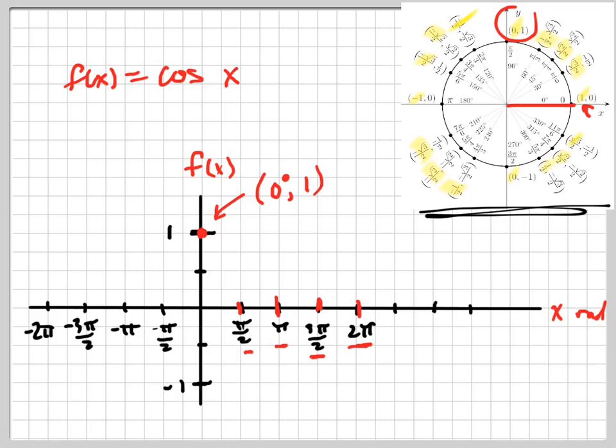At pi over two, the cosine is zero, so there's that point. At pi, which is right here, it's negative one. At three pi over two, which is down there, it's back to zero again. And at two pi, it's back up to one.